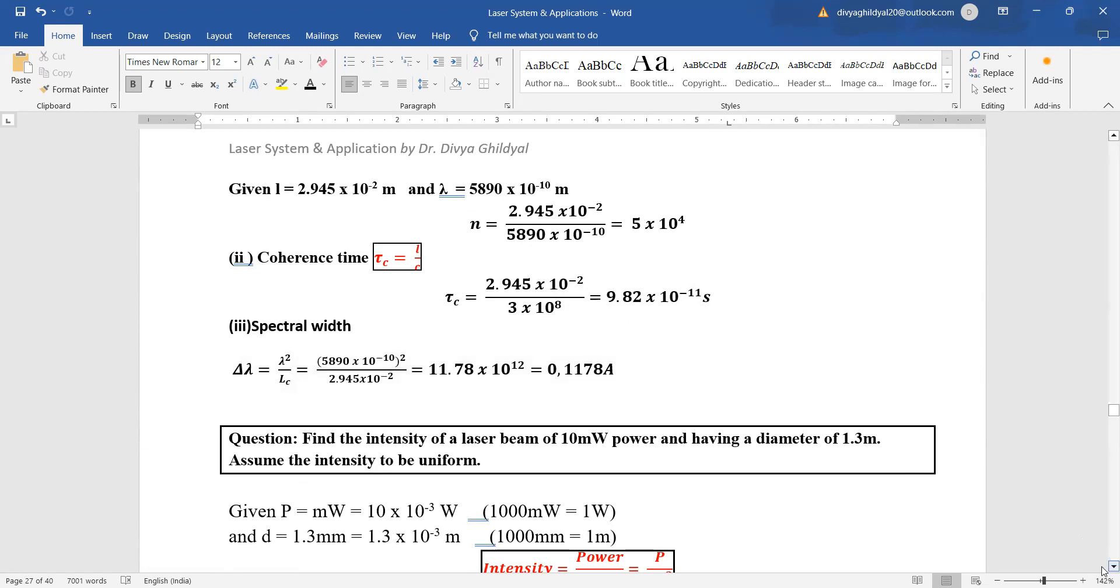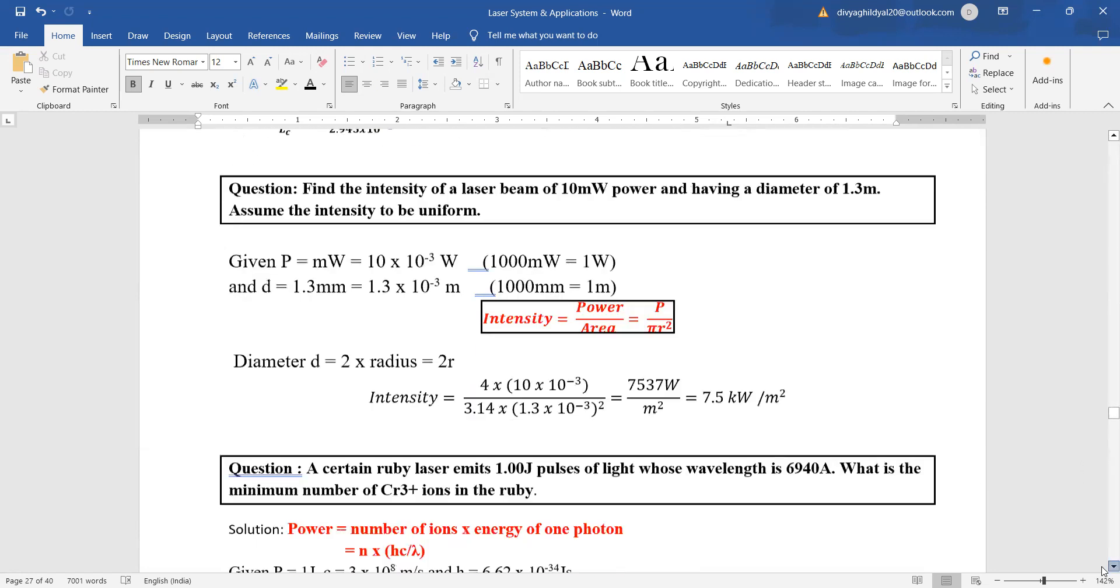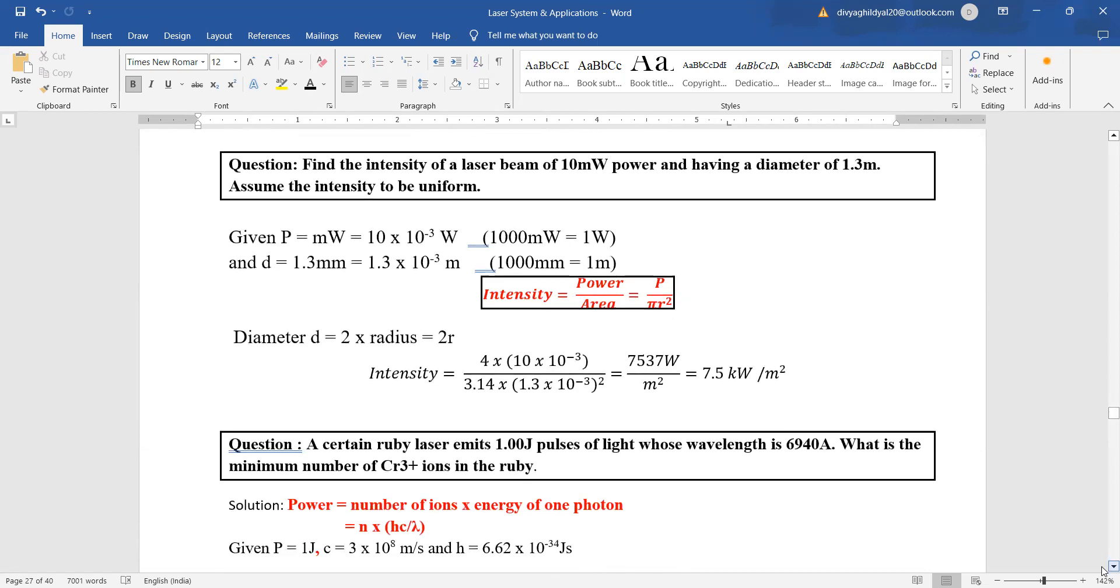Next question: find the intensity of a laser beam of 10 milliwatt power and having a diameter of 1.3 meter. Assume the intensity to be uniform. Power here is milliwatt and d is 1.3 mm. So intensity is power upon area. Diameter is 2 into radius. We will put these different values and get the answer.